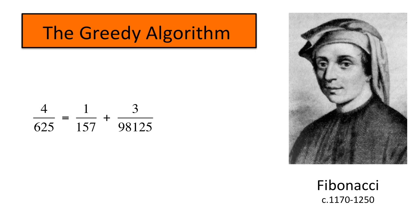How did we get one fifty-seven? Calculate six twenty-five over four and round up to get one fifty-seven.